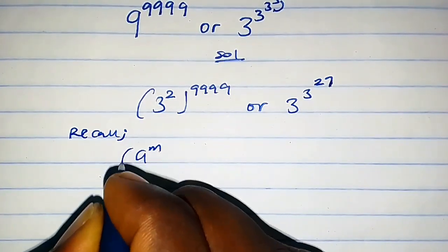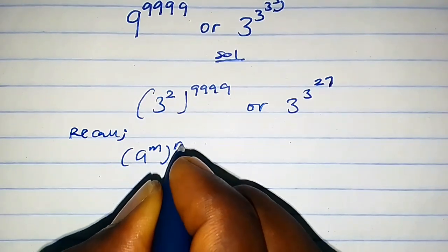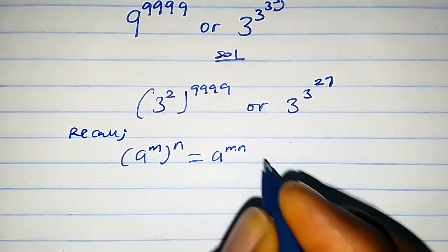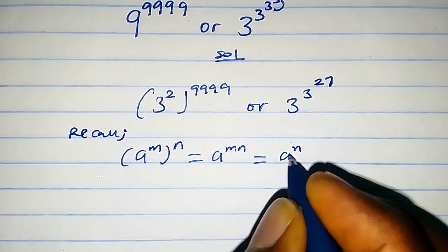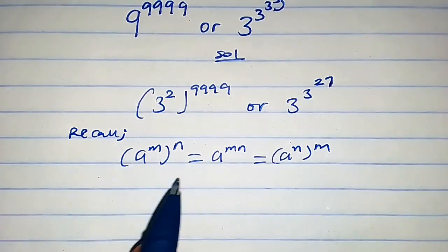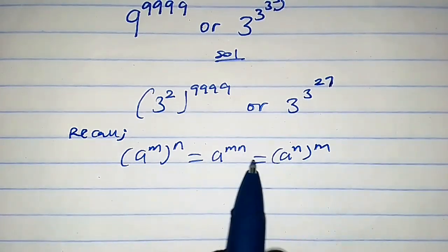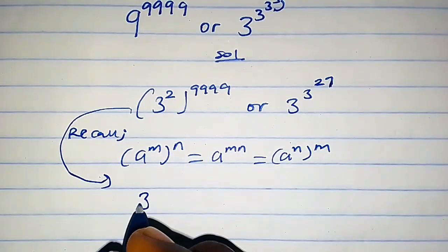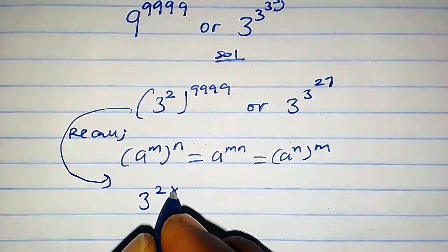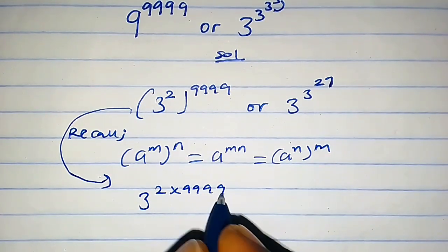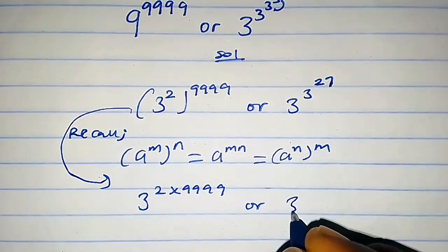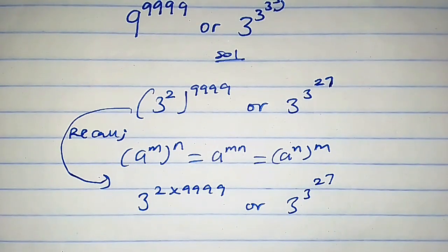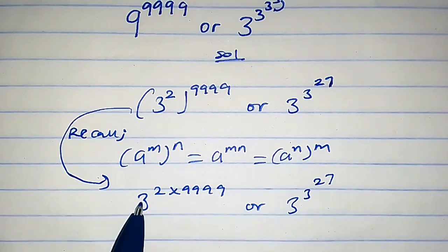Recall that if a raised to the power m times n, we can write it as a raised to the power m·n, which is also the same as a raised to the power n times m. We're going to utilize these properties. From here we get 3 raised to the power 2 times 9^9^9^9, or 3 raised to the power 3^27.